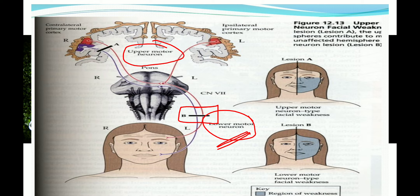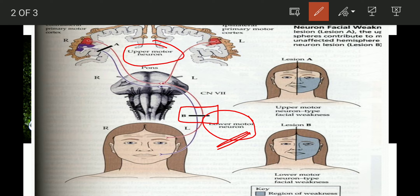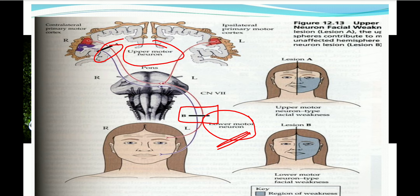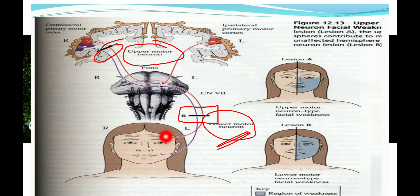If suppose the lesion is here on the upper motor neuron, let me trace this neuron from the contralateral side. This red color has basically innervated the upper half, and this blue color has basically innervated the lower half.